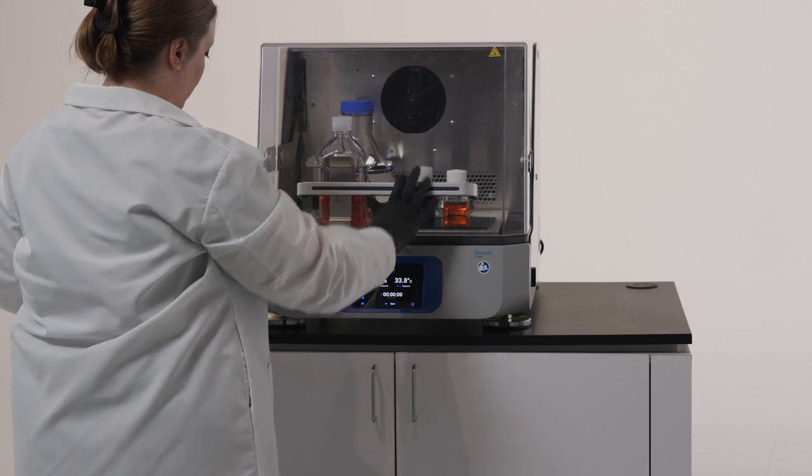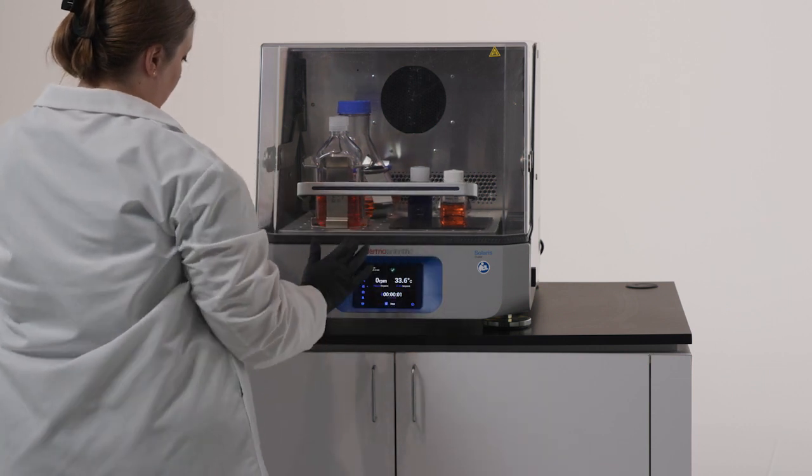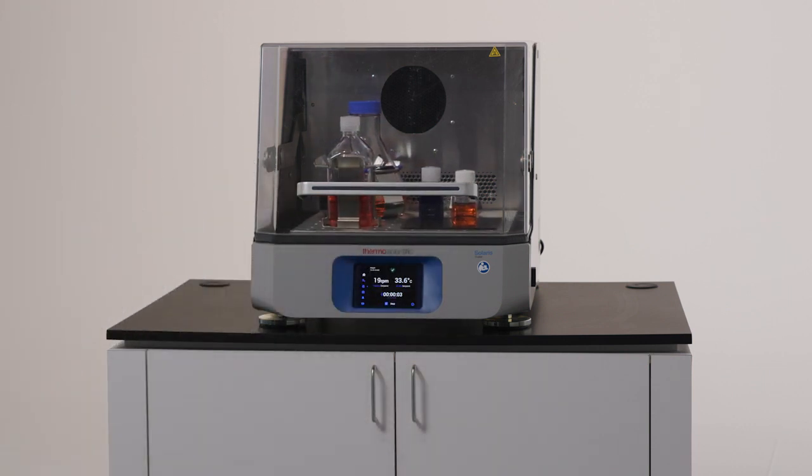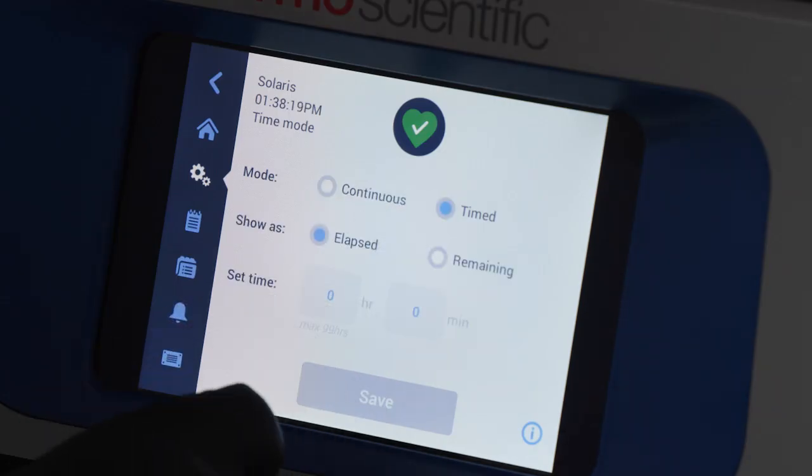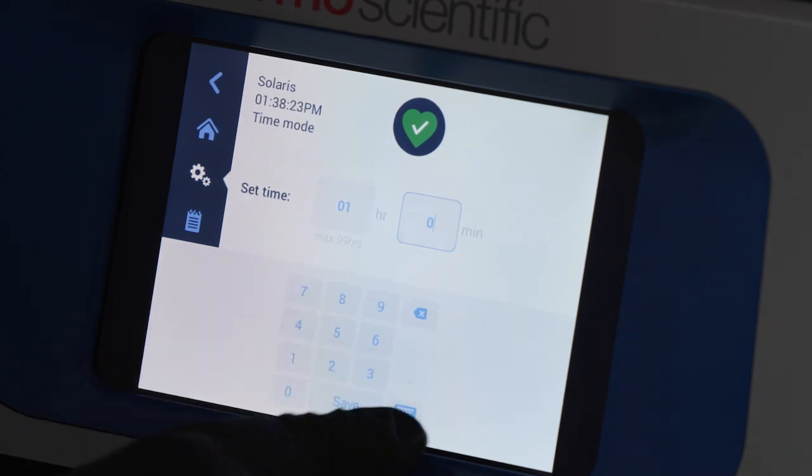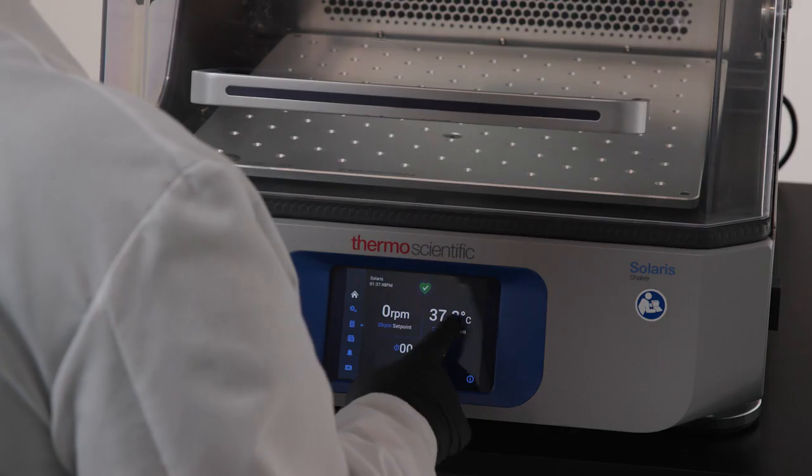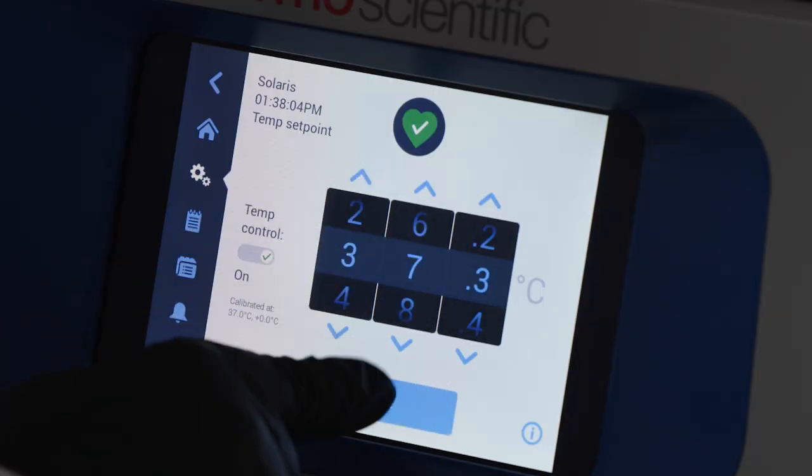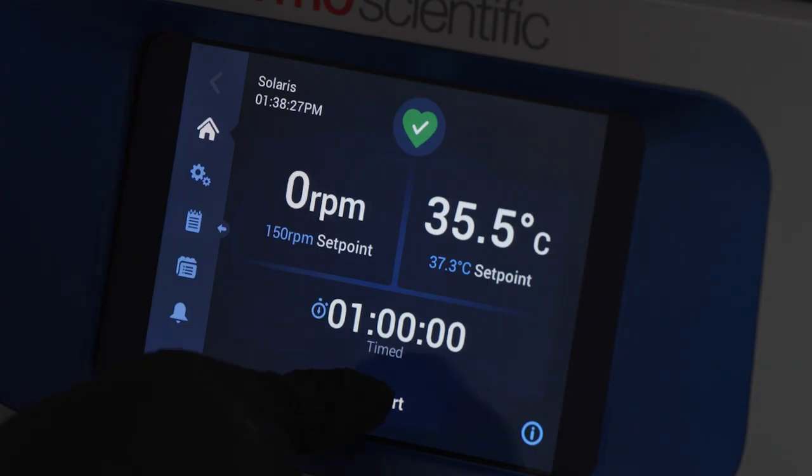Starting your shaker is simple and can be done by running a saved program or a new one, or by simply setting up a timed run. To set up a timed run, select your desired run time, temperature and orbit speed on the display, and press run.